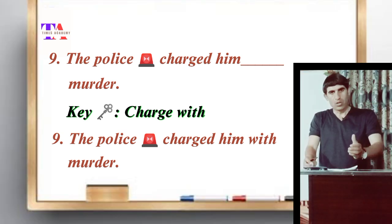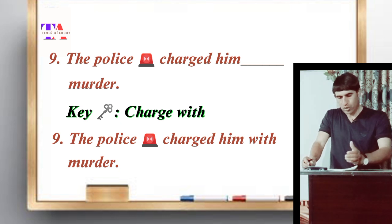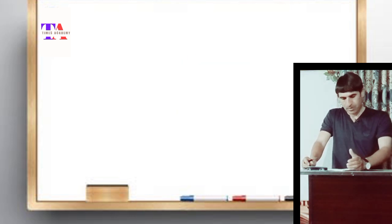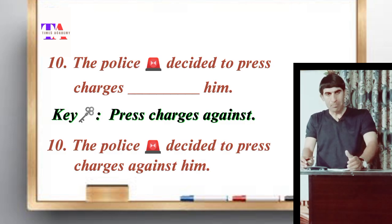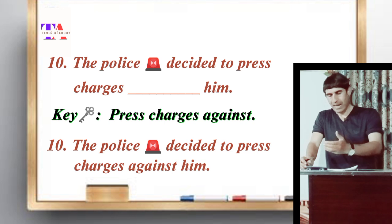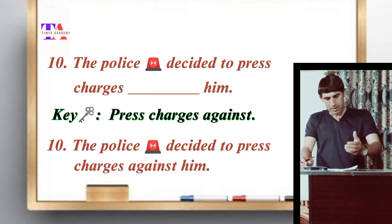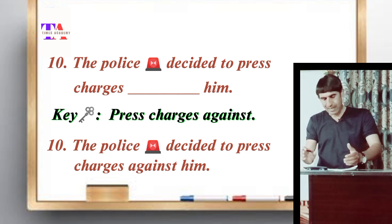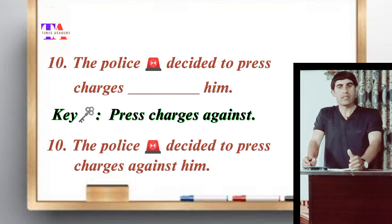Number nine: 'The police charged him with murder.' This is an important case because the formula is: charge somebody with something — so based on this formula it takes the preposition 'with'. The sentence becomes: the police charged him with murder. Number ten: 'The police decided to press charges against him.' The phrase 'press charges' takes the preposition 'against' — press charges against somebody.